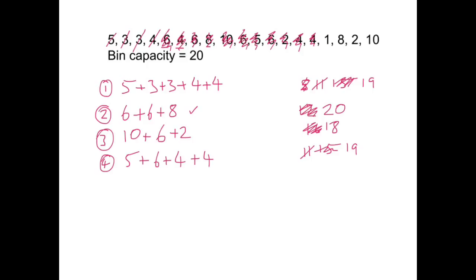1. Now, the 1 actually fits into the first bin. Giving me a total of 20 on that one. So that bin is now complete. Cross the 1 off. 8. Well, it doesn't fit in any of those, so we've got to go to the next one. That goes in there. Cross that one off. And a 2 — the first available one for that one is bin number 3. That gives me a total of 20 in there. Tick. And then cross the 2 off.